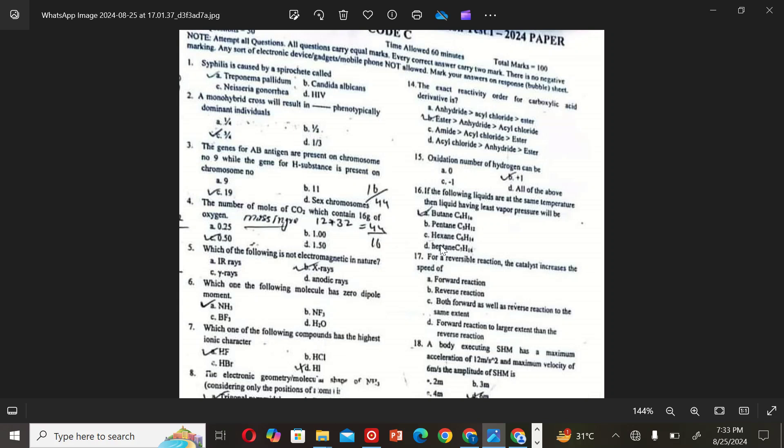The correct option is D, heptane. The next MCQ is: For a reversible reaction, the catalyst increases the speed of A: forward reaction, B: reverse reaction, C: both forward and reverse reaction to the same extent, and D: forward reaction to larger extent than the reverse reaction. So the correct option is C.